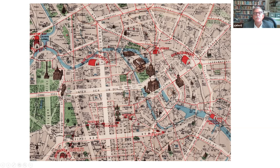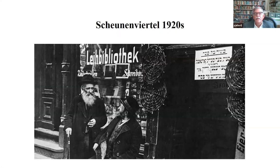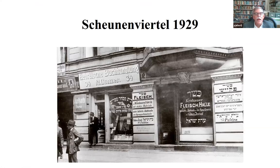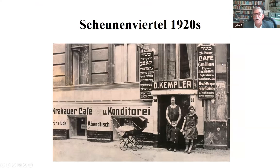Franz Biberkopf gets out on this street. He walks into the Zofienstraße, but then he crosses back over and ends up here in the Dragunerstraße in an apartment of Jews. That's where the novel begins. Just to give you some more visual images — this is the Scheunenviertel in the 1920s, those few blocks I mentioned. Here you have a lending library, a Hebrew bookstore, as well as a butcher shop called the Krakow Butcher Shop. Here's another picture — the Krakow Café — all within a few blocks of each other in the Scheunenviertel. This is where Franz Biberkopf first lands at the beginning of the novel.